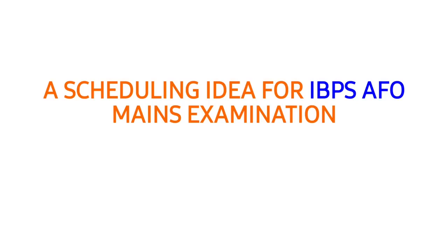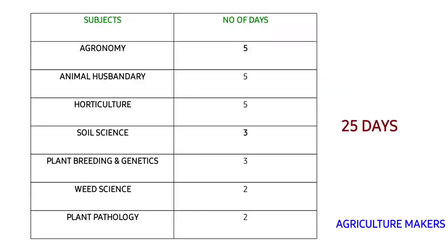In this schedule, I have given an ample amount of time to cover each and every subject. I haven't structured the schedule based on date because you can schedule it based on your interest. If you are interested in agronomy, then first go for it, and after that go for your vague subject — alternate them so that it will be easy for you to manage.